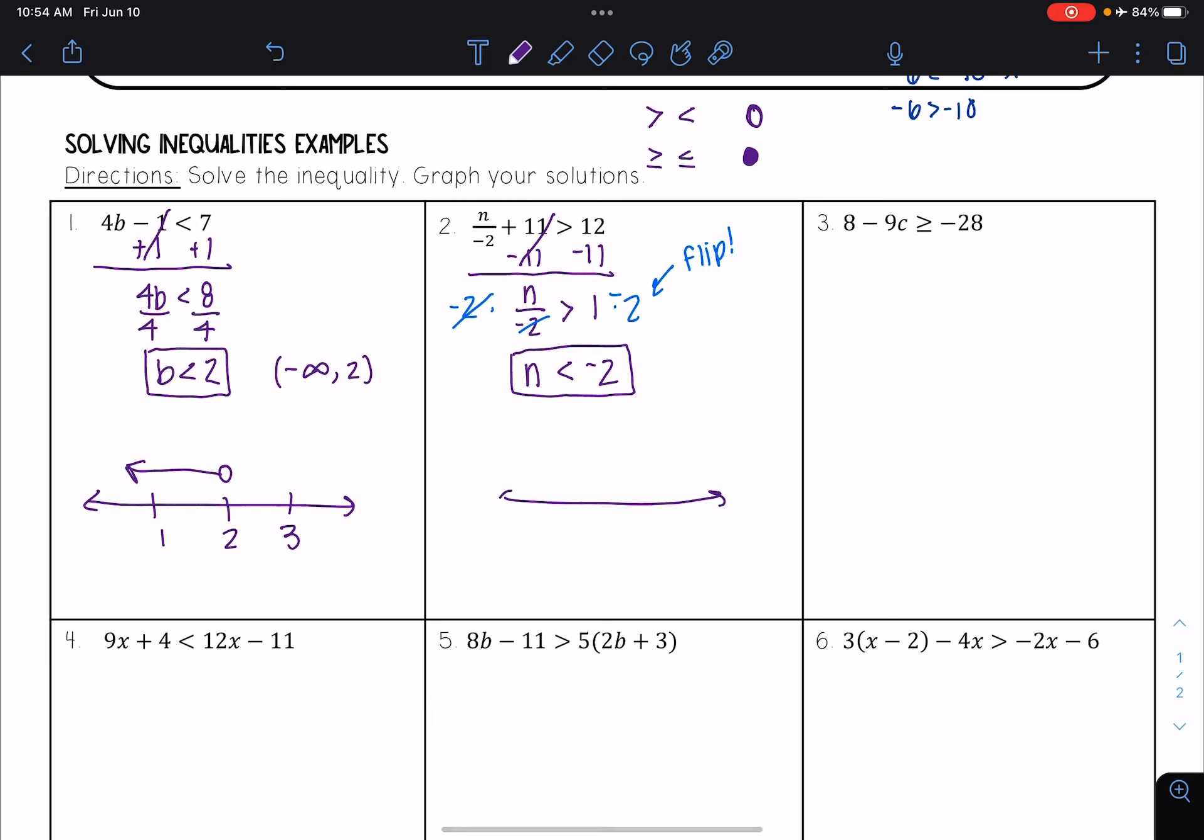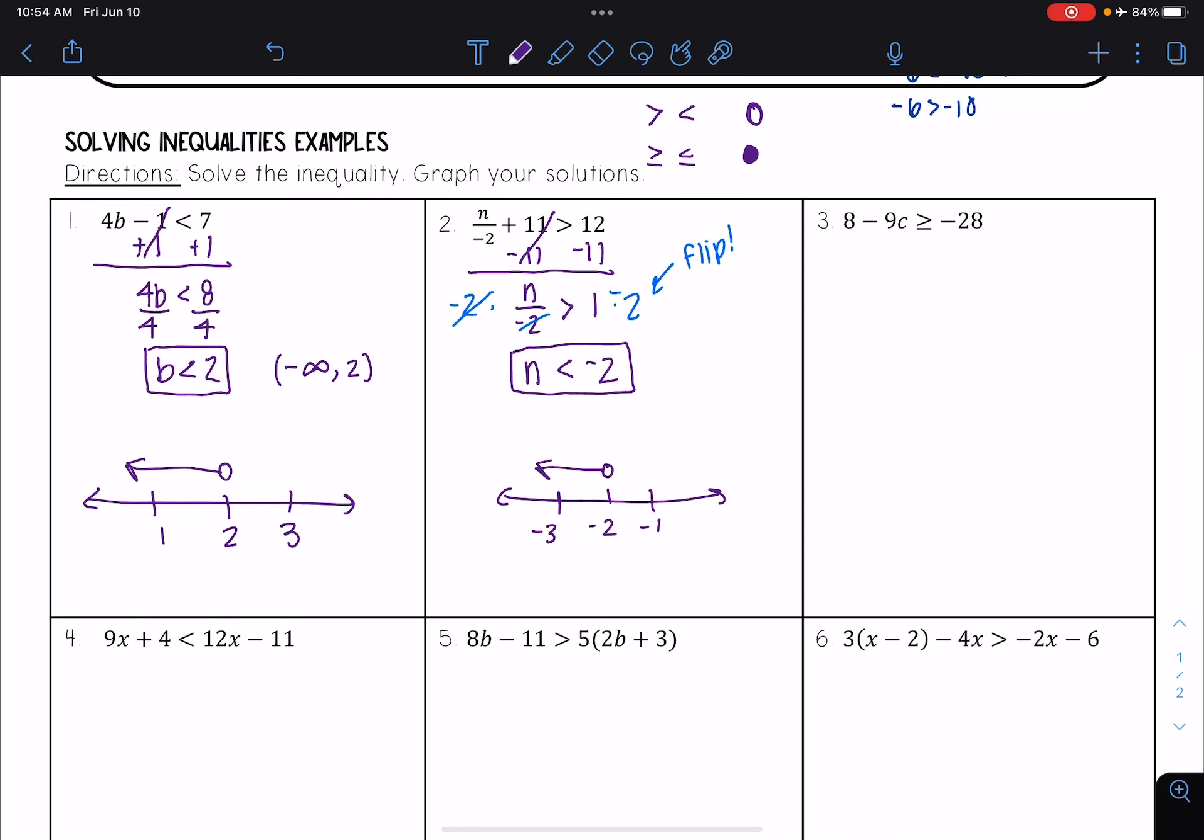And so graphing that, I have less than, so I need an open circle. I want everything less, so I draw my arrow to the left.